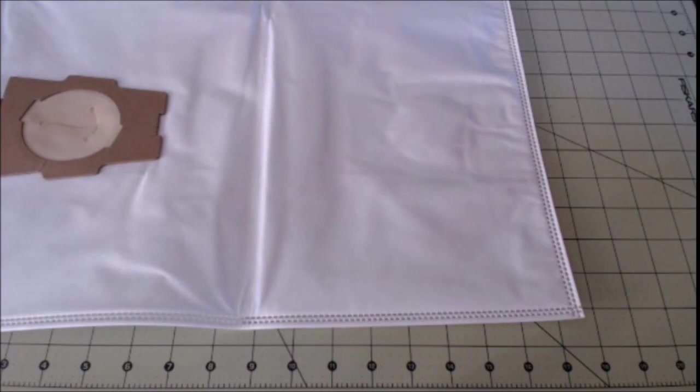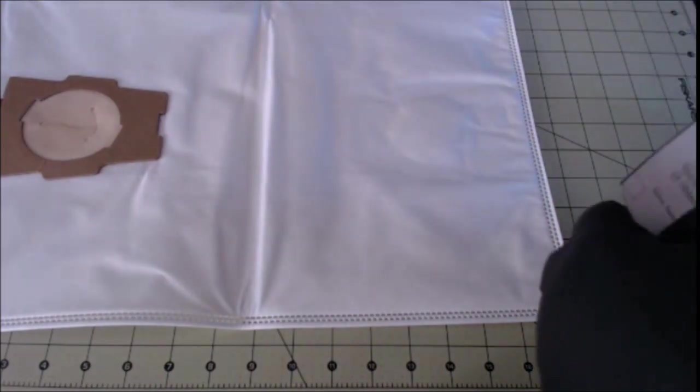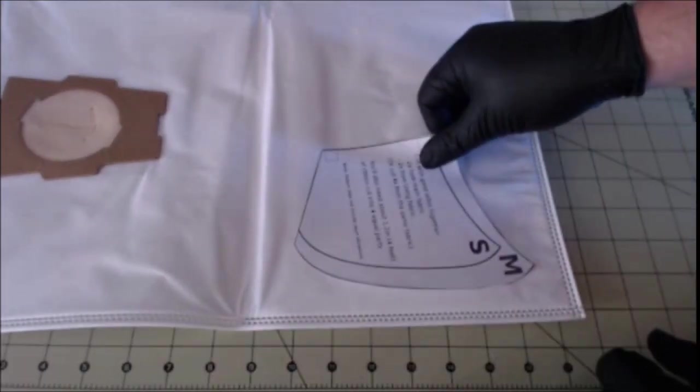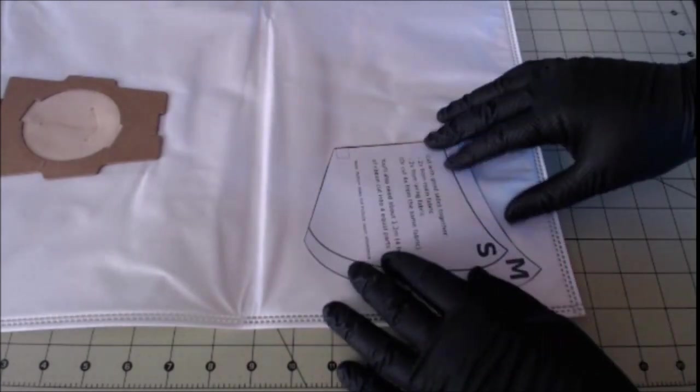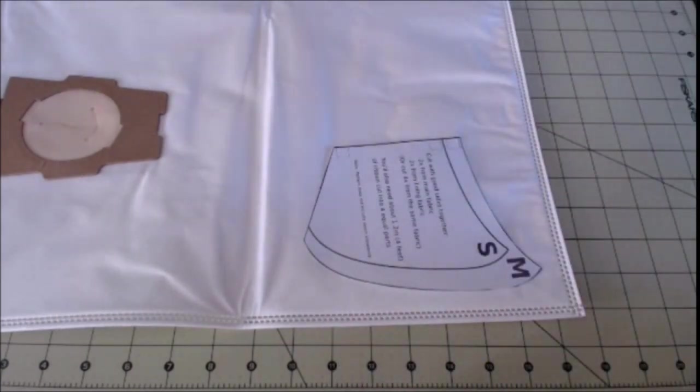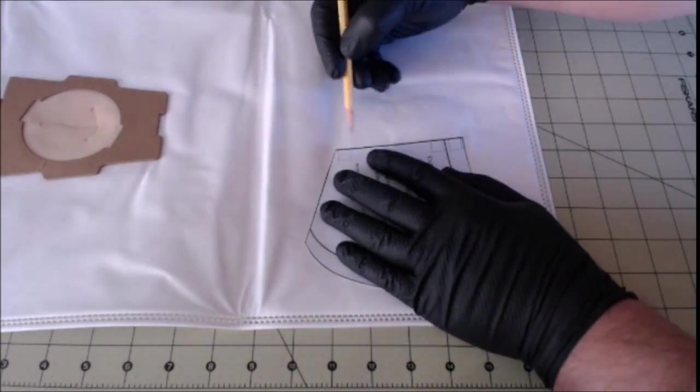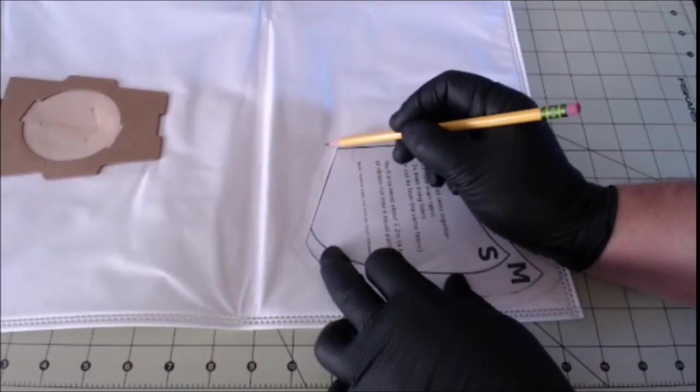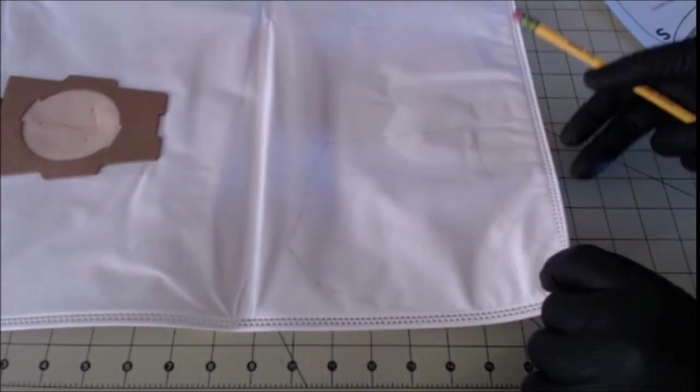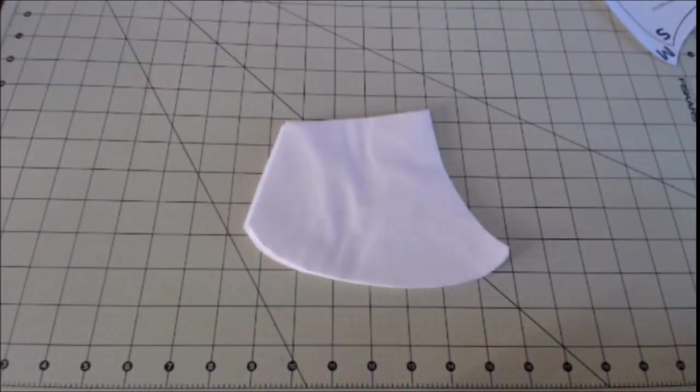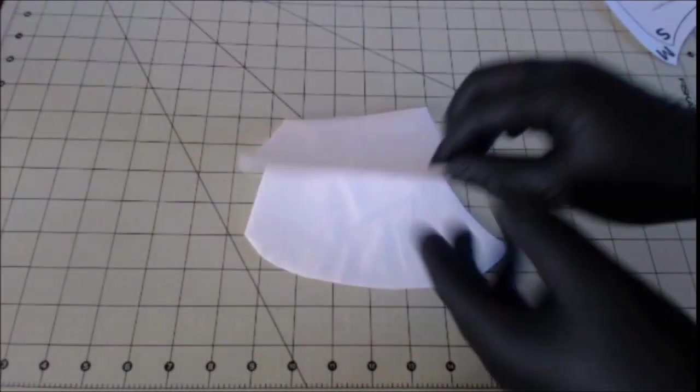Open the bag up here. Take your cutout template and put it in one of the corners. Then take a pencil and trace about a quarter of an inch all the way around the template. This is what we're going to cut out. Make sure you cut out both sides at the same time. It leaves you with two halves of a face mask.